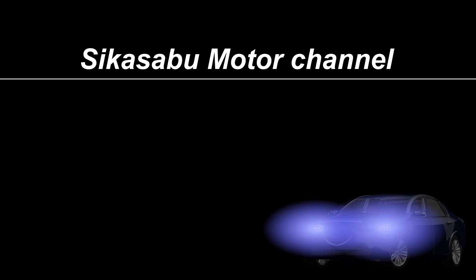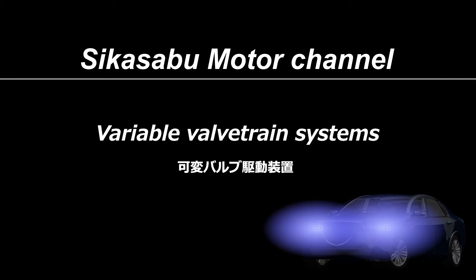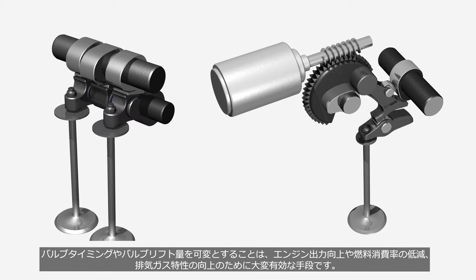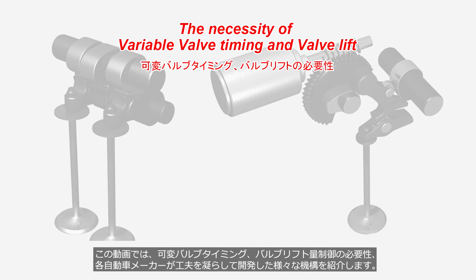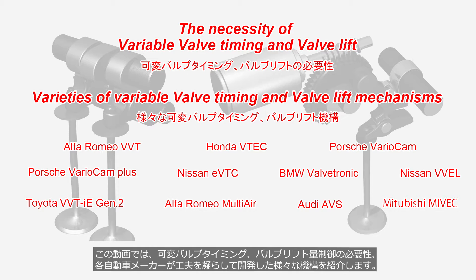Welcome to the Sheikha Serbu Motor Channel. The topic of this video is Variable Valvetrain Systems. Variable valve timing and variable valve lift are highly effective methods for improving engine output, reducing fuel consumption, and enhancing exhaust gas characteristics. This video showcases the necessity of variable valve timing and valve lift, and variable mechanisms developed by various automotive manufacturers with ingenuity and creativity.